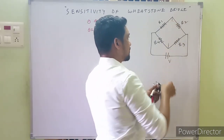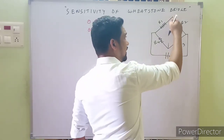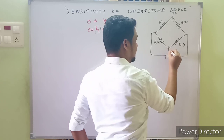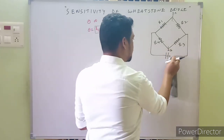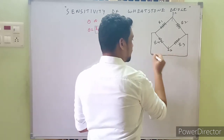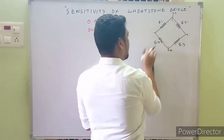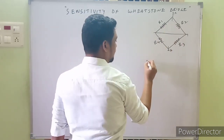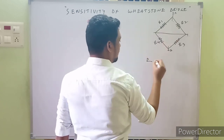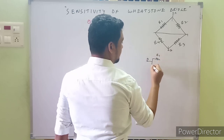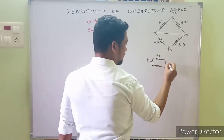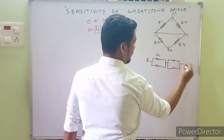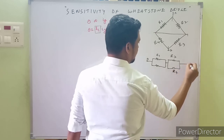To find the Thevenin's equivalent resistance, the galvanometer terminals A and B are opened up, and the power supply is short-circuited. With this modification, R1 and R2 are in parallel on one half of the bridge, and R3 and R4 are in parallel on the other half.